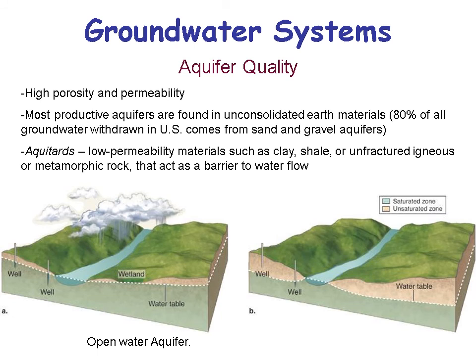Aquifers vary in quality. To be a good aquifer, you need high porosity and permeability. The most productive aquifers in the U.S. come from unconsolidated earth material — it hasn't lithified or been turned into rock. 80% of all groundwater withdrawn in the U.S. comes from sand and gravel aquifers.